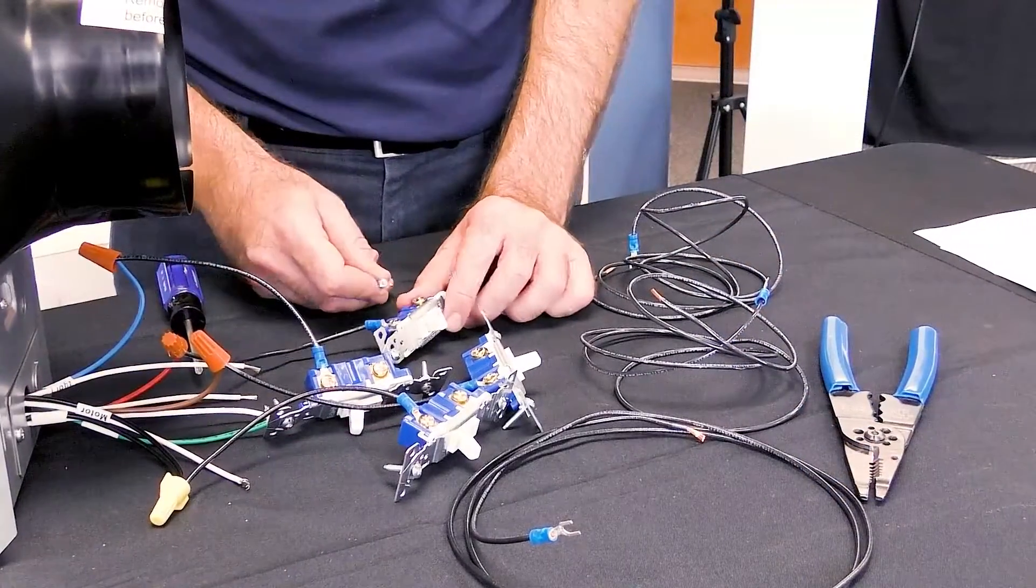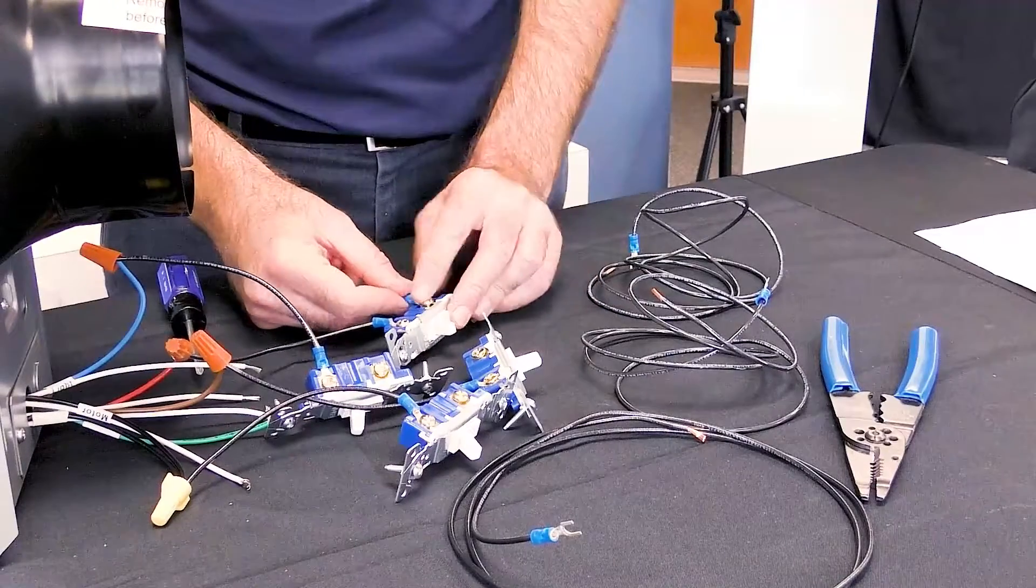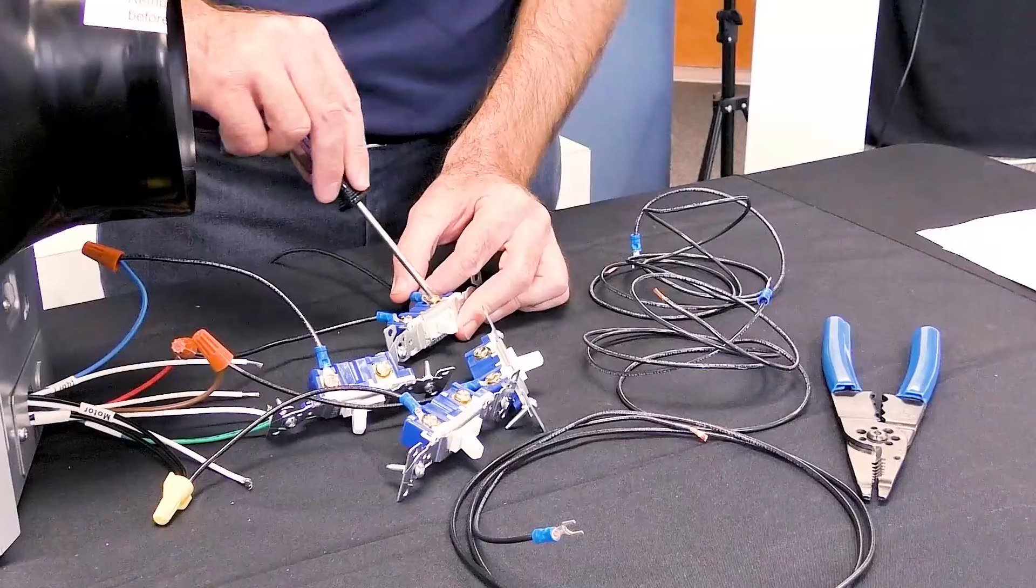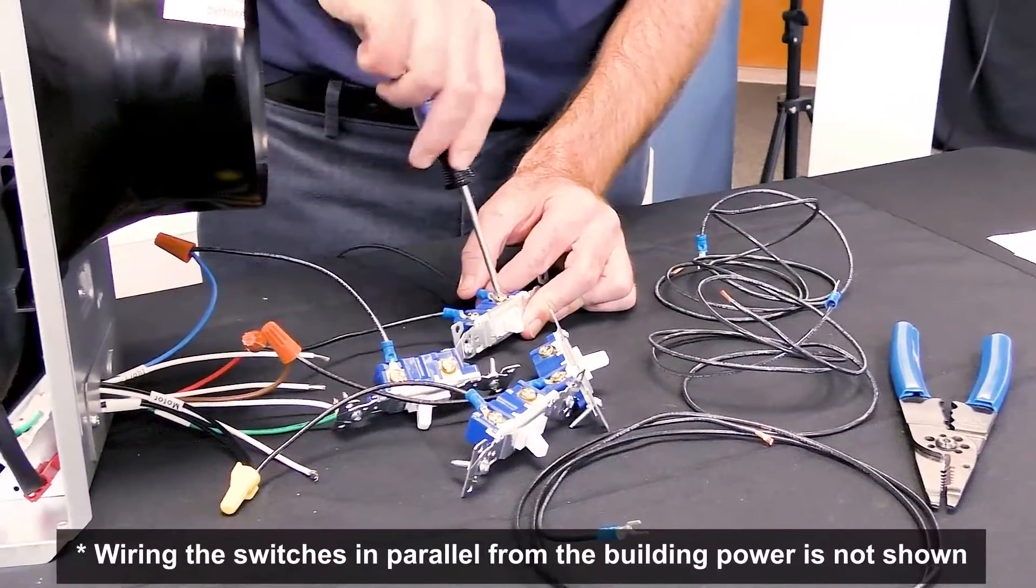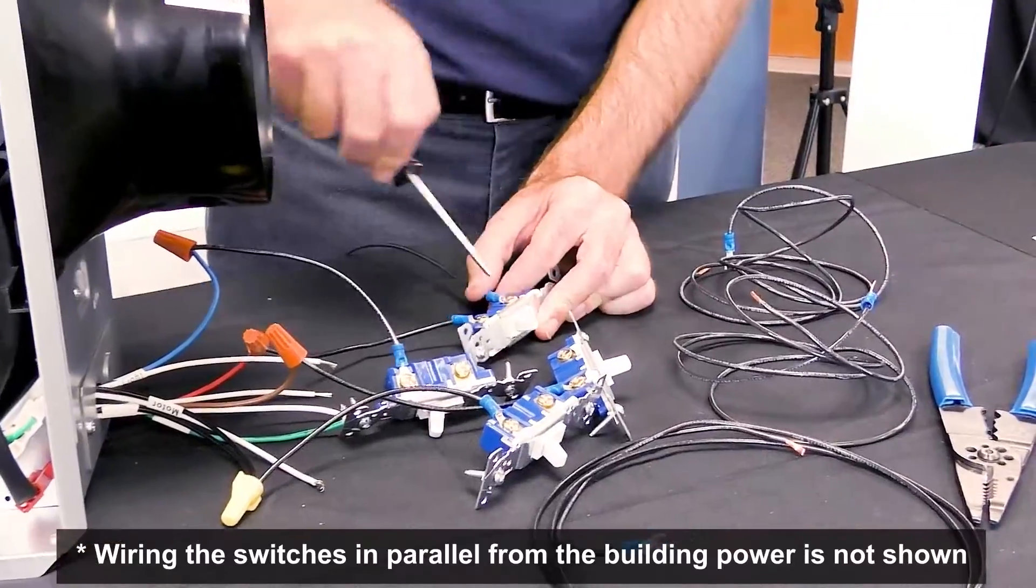After that, attach the incoming building supply wire to the line side of each switch while wiring them in parallel. Use your Phillips head screwdriver to ensure the switch connections are tight.